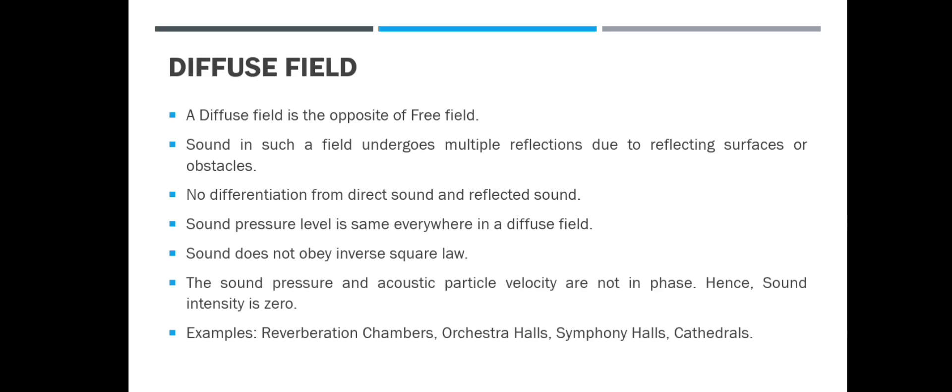Now let's look at what is a diffuse field. A diffuse field is the direct opposite of a free field — it is a field characterized by multiple reflections. There are so many reflections that you can never distinguish between the real sound and the reflected sound. In a room with a diffuse field, sound is present in every corner at the same sound pressure level. In this field, sound doesn't obey the inverse square law, and the sound pressure and particle velocity are not in phase.